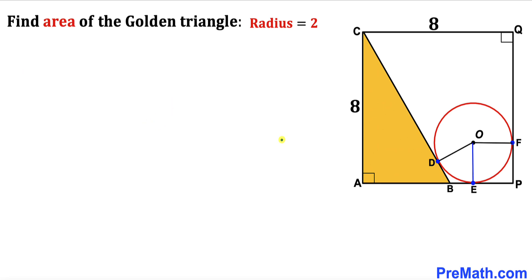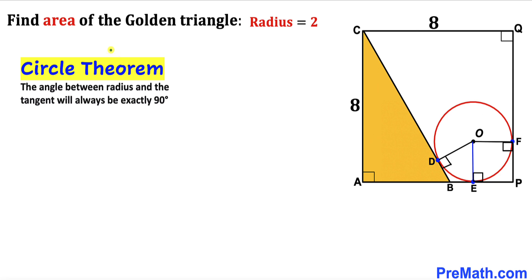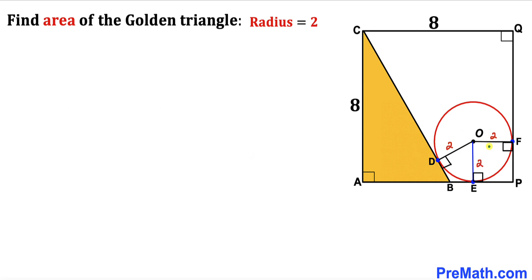Let's get started with the solution. I have connected the center O with points D, E, and F. Recalling the circle theorem: the angle between the radius and the tangent will always be 90 degrees. So all these angles are 90 degrees, since these are our radii and these are our tangent lines. The radius of this circle is 2 units, so OF, OE, and OD each equal 2.